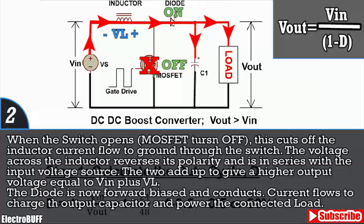In the next stage, the switch now opens, and because there is no current path to the negative rail through the switch, the voltage across the inductor will reverse and so it is in series with the input voltage. This will cause the diode to switch on because it's forward biased, and the current flowing through the diode will be used to charge the output filtering capacitor and power any load connected.